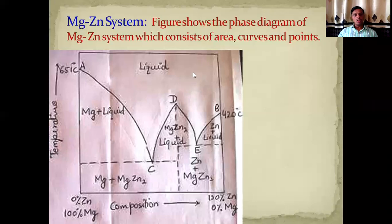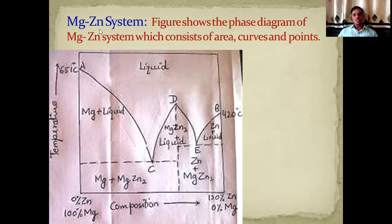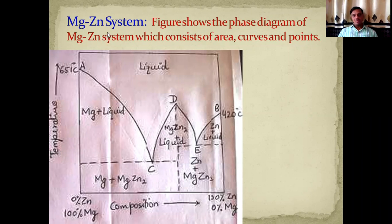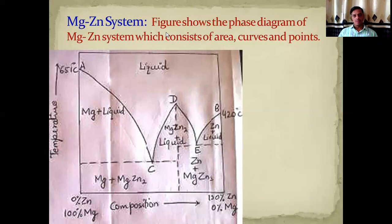Hello students, welcome to the chemistry online class. In the previous lecture we were discussing compound formation with congruent melting point. The example of compound formation with congruent melting point is the magnesium-zinc system. In the examination, the question may be asked: explain compound formation with congruent melting point with a proper example, or the same question may be asked as: explain the phase diagram of magnesium-zinc system.